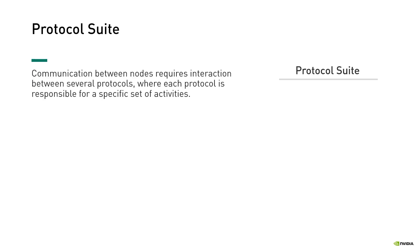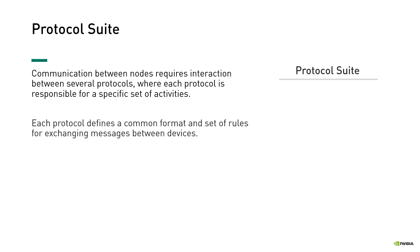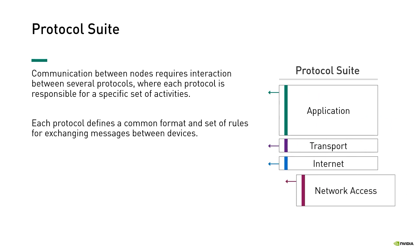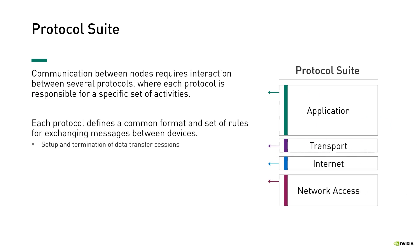For the end nodes to be able to communicate with each other — for example, sending and receiving traffic — they must implement the same communication protocols, where each protocol is responsible for a specific set of activities. Each protocol defines a set of communication rules, such as how the communication session is set up and terminated, what the message format is, and how errors are handled.